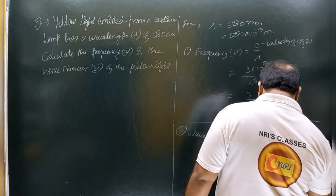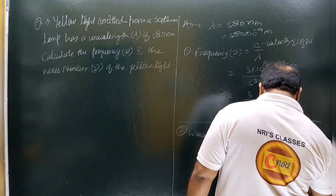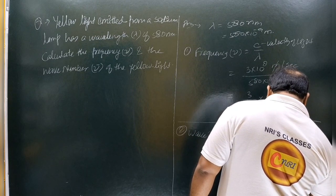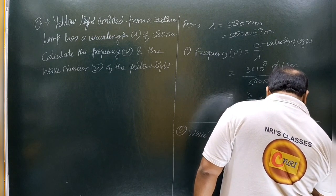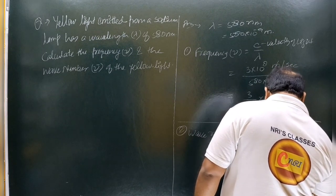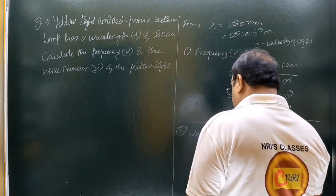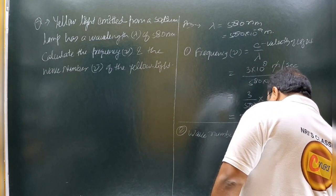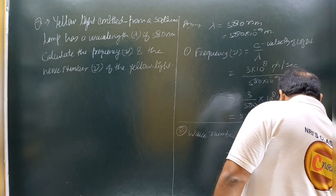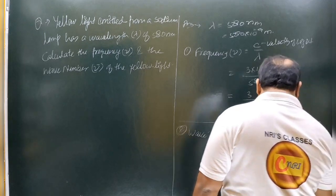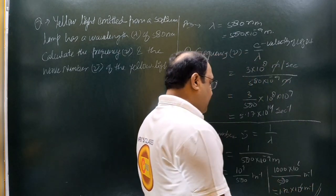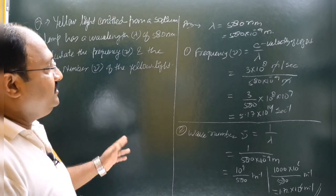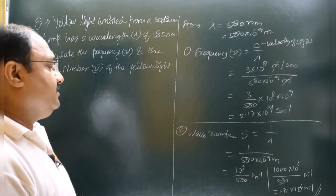यानि कि आप इसको लिख सकते हो 1000 into 10 to power 6 by 580 meter inverse। इसकी value जो आती है वो आती है 1.72 into 10 to power 6 meter inverse। इस तरह से इन दोनों को हम solve कर सकते हैं।